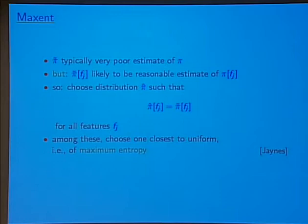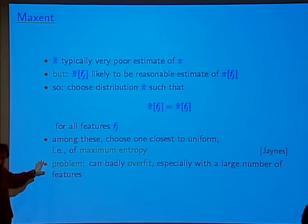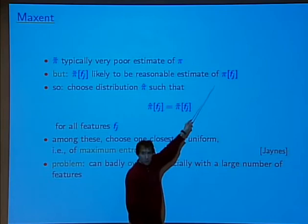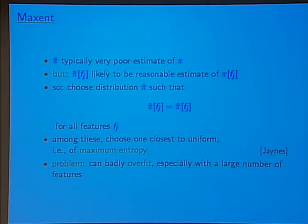In general, there might be many distributions that satisfy these constraints, and among all of those we want the one that has highest entropy — an idea that goes back at least to Jaynes, if not to Boltzmann. The problem with this approach is that it can badly overfit, especially if you have a huge number of features. There's also a mismatch between the motivation and the execution: we're requiring equality when we only expect the empirical average to be close to the true expectation.